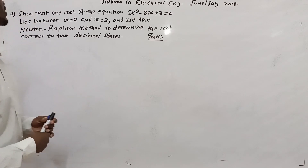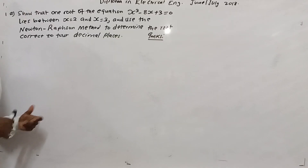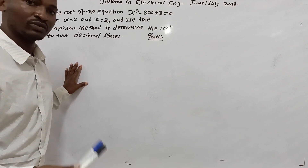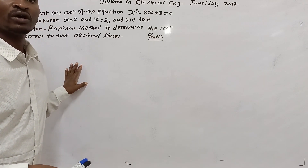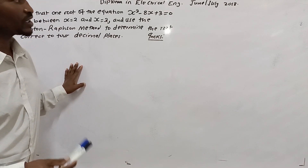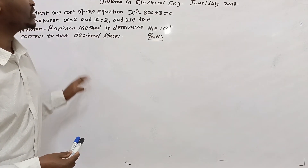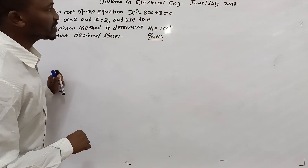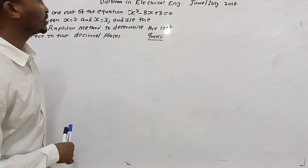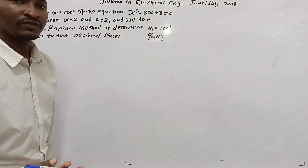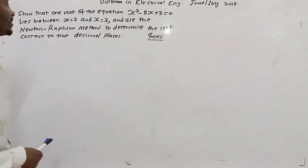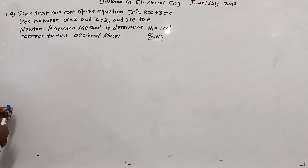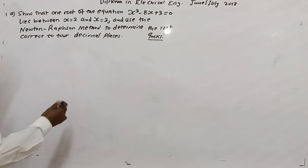Welcome to this video. In this video we will be looking at examples on how you can obtain the solution, the root, or the zero of a certain function f(x) = 0 using the Newton-Raphson formula. If you have not checked my previous videos, remember to check them. Also leave your question, leave your comment, and remember to subscribe to the channel.